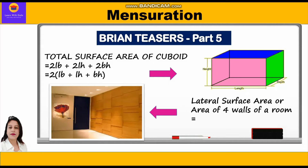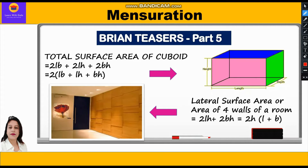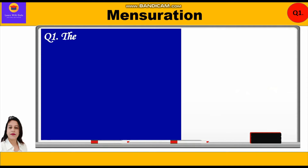Lateral surface area, or the area of the four walls of a room, is equal to twice of length into height plus twice of breadth into height. Taking 2h common, we write 2h(l + b). So the formula for area of four walls of a room is 2H(L + B).